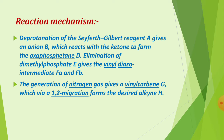In the mechanism: first, deprotonation of the Seyferth-Gilbert reagent occurs to give anion B. Anion B reacts with the ketone to form the oxyphosphonate (C). Then elimination of dimethyl phosphate gives the vinyl diazo intermediate (E, F). Generation of nitrogen gas gives a vinyl carbene (G).